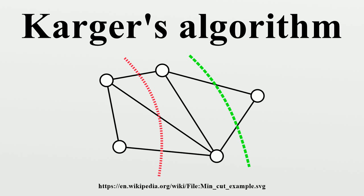The global minimum cut problem: A cut in an undirected graph is a partition of the vertices into two non-empty, disjoint sets. The cut set of a cut consists of the edges between the two parts. The size of a cut in an unweighted graph is the cardinality of the cut set.